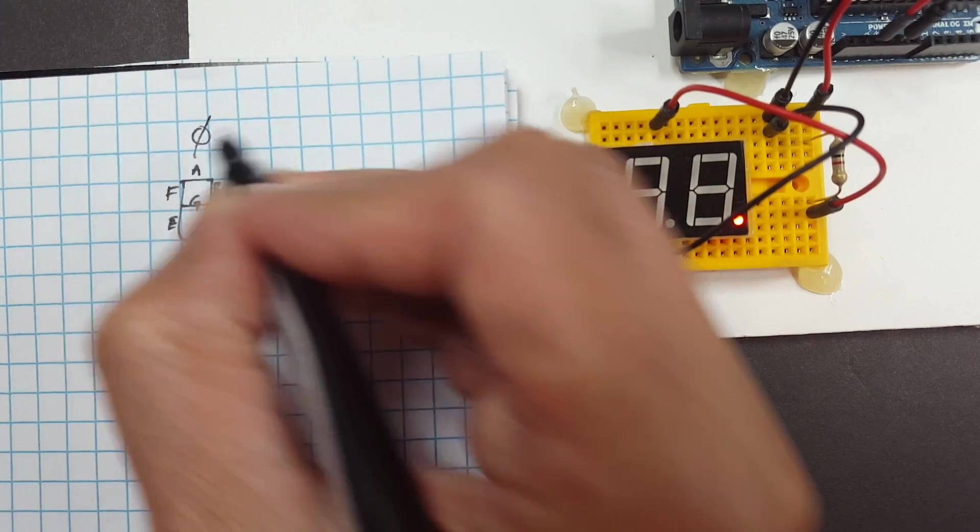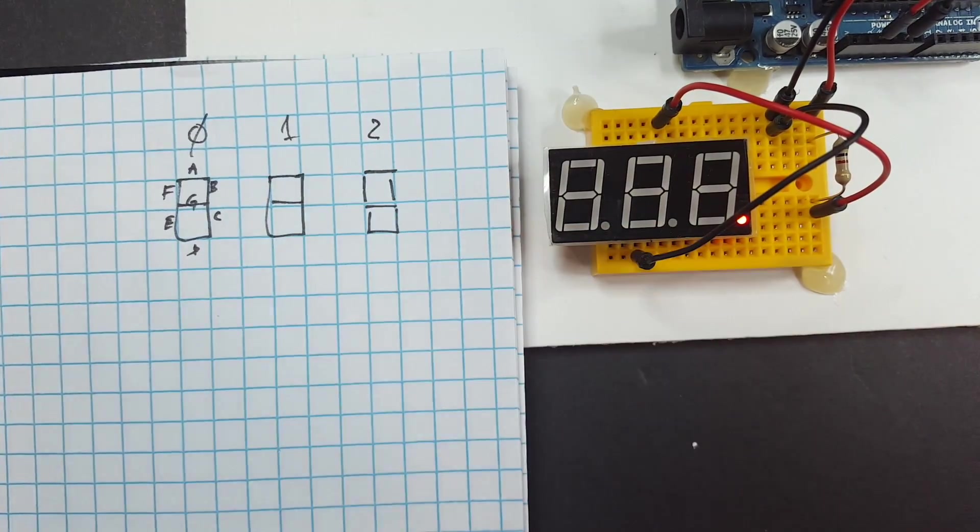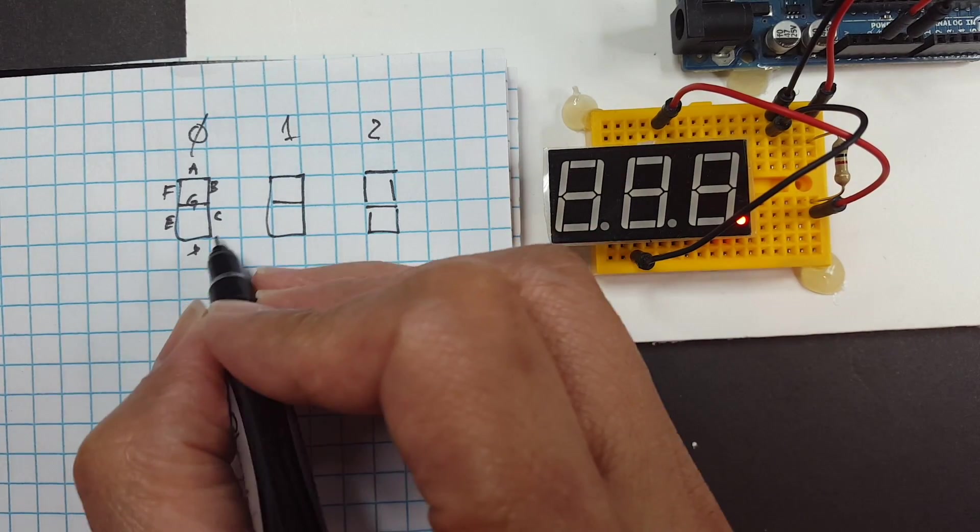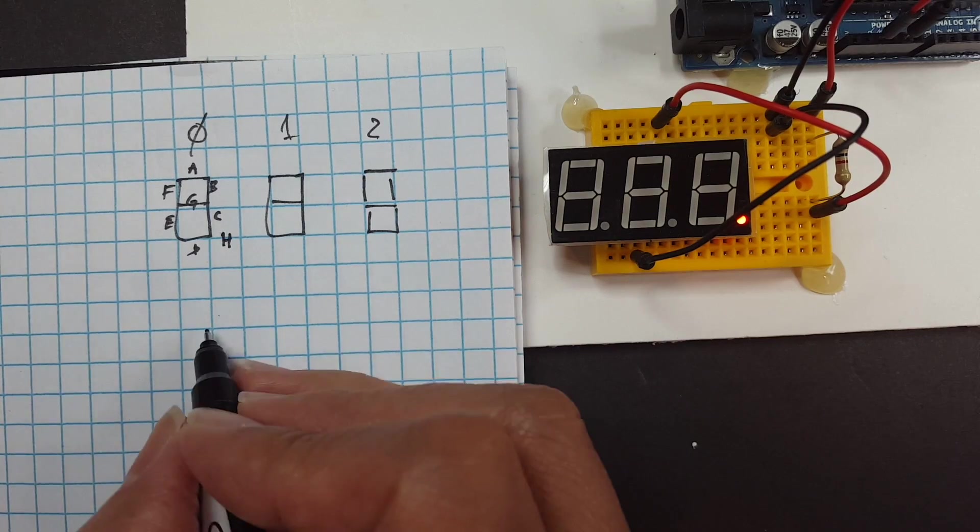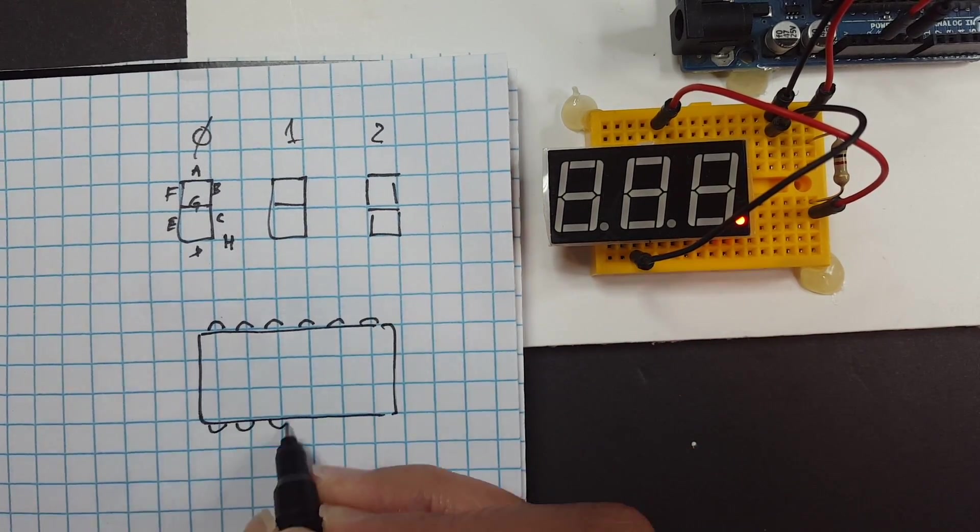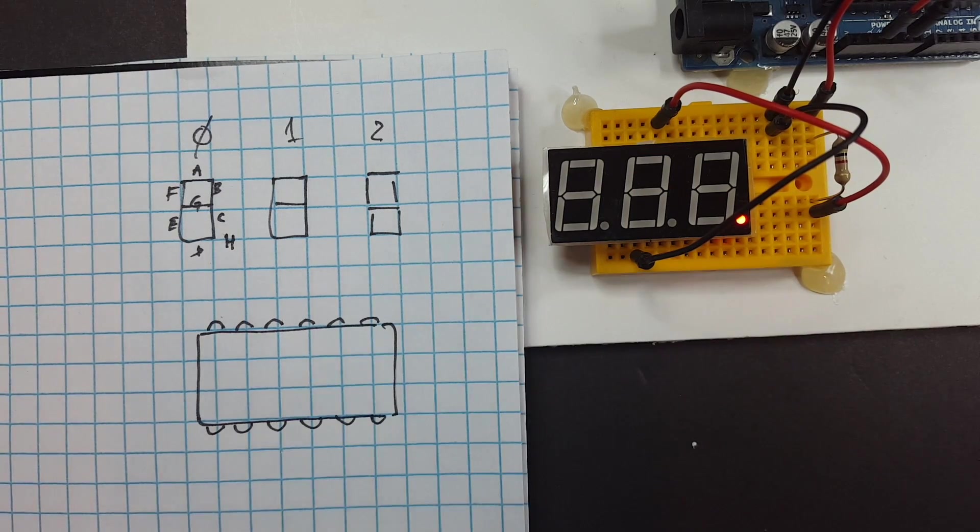I'm gonna call it zero, one, and two and we got a dot, GH I guess. Okay, we need to draw the pins now: one, two, three, four, five, six. Okay, we got this one which is a third pin.